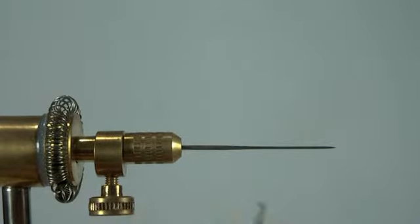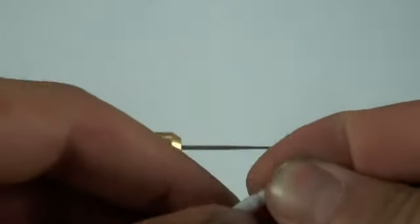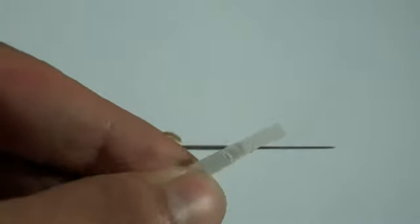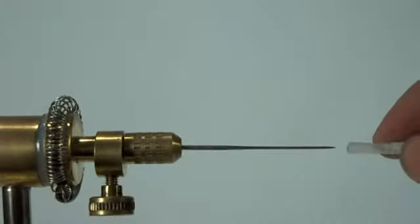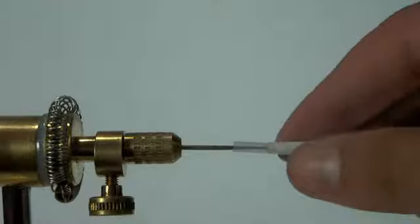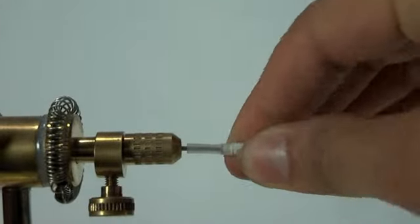Now we're ready to attach the hook tube. Push it onto the pin until it's tight so it won't spin.